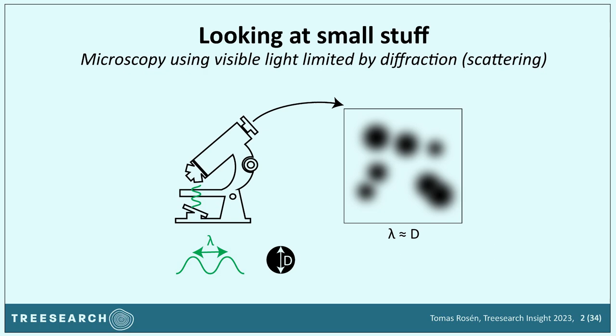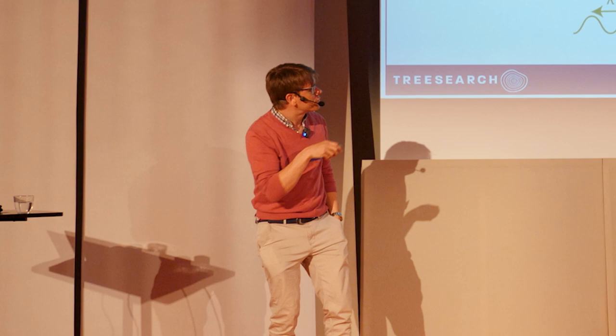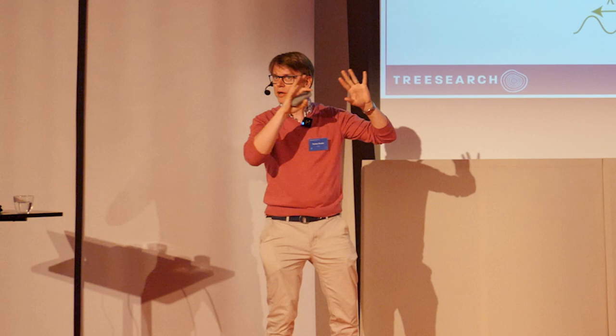Well, the problem is that with a typical microscope you have a visible light source with visible wavelengths going through your material, collected by lenses. This is how the object interacts with the beam through absorption and reflection. But when the objects you want to image are on the same order of magnitude as the wavelength — or even smaller — you start getting diffraction, and the light starts to scatter, making it difficult to distinguish the objects.